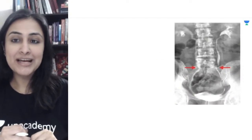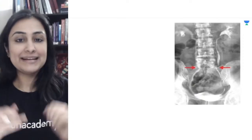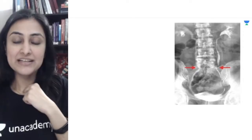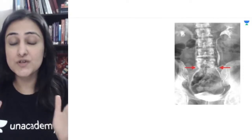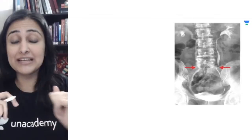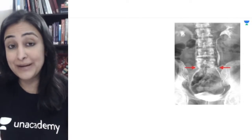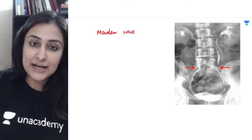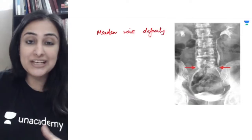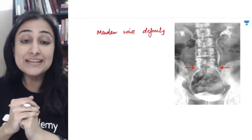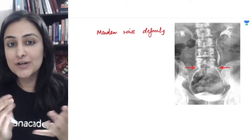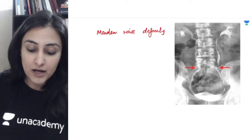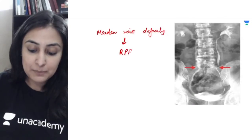Next image: the arrows show that inferiorly toward the inferior part of the ureters, both ureters are approximating each other. This appears like a maiden waist — a very narrow waist. This maiden waist deformity is associated with retroperitoneal fibrosis, which is pulling the ureters closer to each other medially.